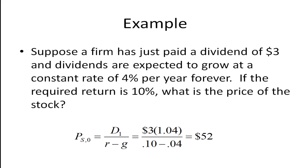So if we look at an example, suppose a firm has just paid a dividend of three dollars and dividends are expected to grow at a constant rate of four percent per year forever. If the required return is ten percent, what is the price of the stock? Well they just paid the dividend this year so we need to find out next period's dividend and it's going to grow at this four percent rate so it's going to be three dollars times 1.04 and we're going to divide that by the required return 0.10 minus the growth rate 0.04 and if we do that we get fifty two dollars.